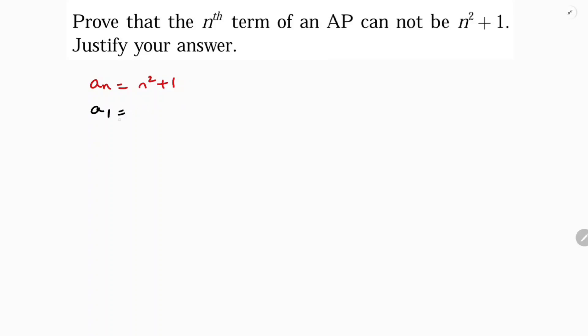First I'll find a1, a2, and a3. a1 is 1 square plus 1 which is 1 plus 1 equals 2. Next, a2, I'll find 2 square plus 1, 4 plus 1 which is 5. a3 is 3 square plus 1, 9 plus 1 which is 10. So here I got a1, a2, a3.